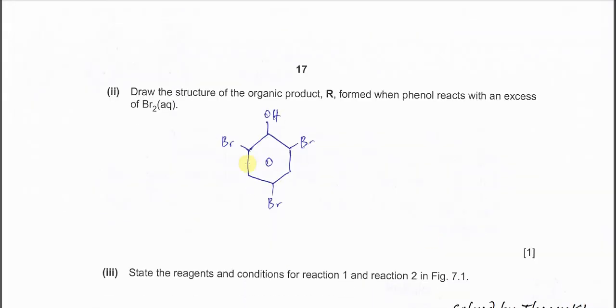Part two: Draw the structure for the organic product R from phenol reacting with excess bromine. I already told you all these positions 2, 4, 6 will undergo this halogenation, which is electrophilic substitution.